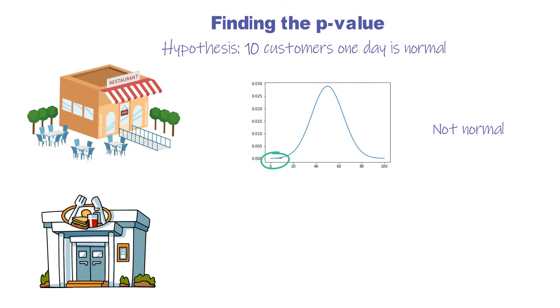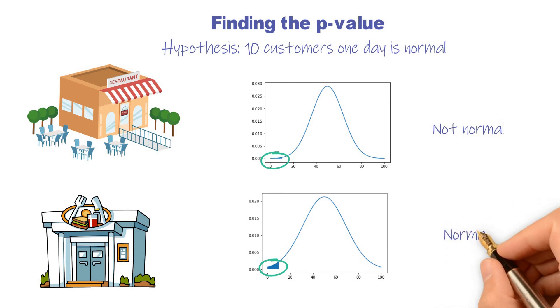However, for another restaurant, the distribution is like this. Then, the p-value is greater than 5%, so we call that it's a normal day.